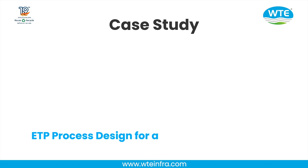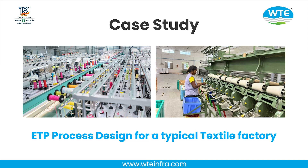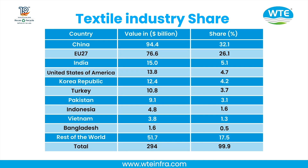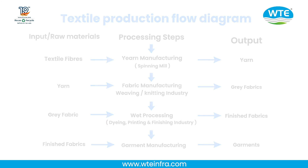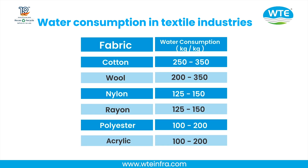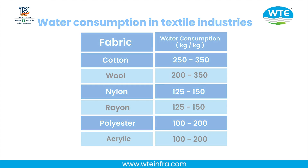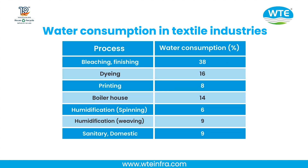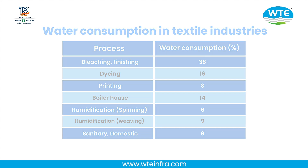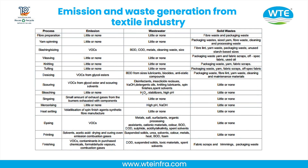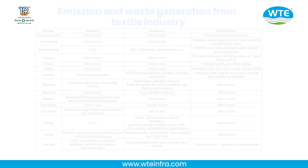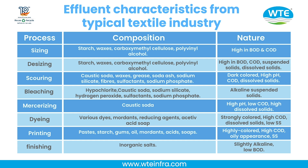Case Study: ETP process design for a typical textile factory. This includes a textile industry share chart showing values in billions and share in percentage. A textile production flow diagram is presented, along with charts illustrating water consumption levels in the textile industry, and emission, wastewater, and solid waste generated at different stages of textile production.